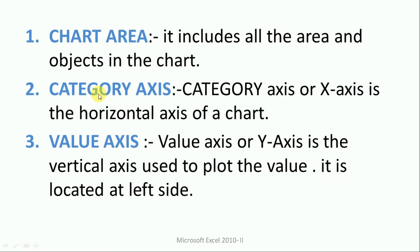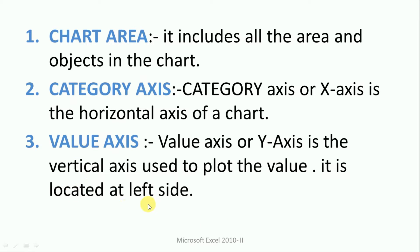Next is the category axis and the value axis. We have two axes. The category axis is the horizontal axis of a chart — the X-axis — and this can be asked in MCQs. The value axis, or Y-axis, is the vertical axis used to plot values. On the Y-axis, values are plotted, and on the X-axis, categories are plotted.